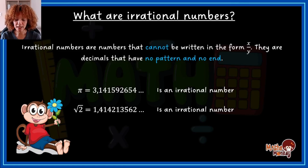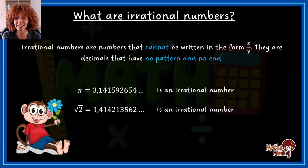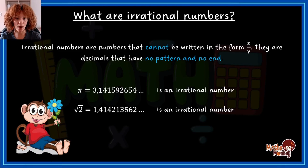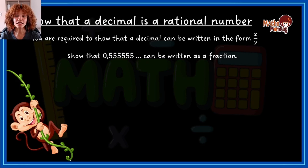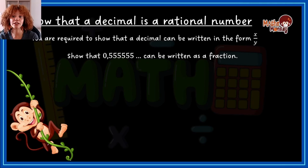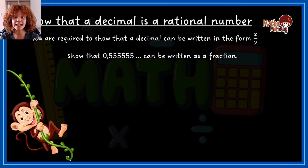Now that we're clear on what rational and irrational numbers are, you must be able to convert a rational decimal into the form a over b — taking a decimal value and converting it to its equivalent fraction. So let's show that a decimal is a rational number. You are required to show that 0.5555 recurring can be written as a fraction.